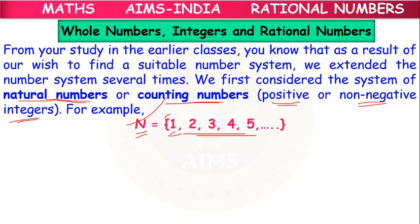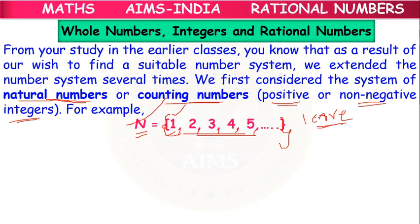The number set is represented within flower braces. All the numbers inside the set are called elements, separated by commas. The smallest natural number is 1, and the largest natural number does not exist. Because if we take 1 crore as the largest natural number and add 1 to it, we get 1 crore 1. Like that, for any bigger number, adding 1 gives the next bigger number. So the largest natural number does not exist.